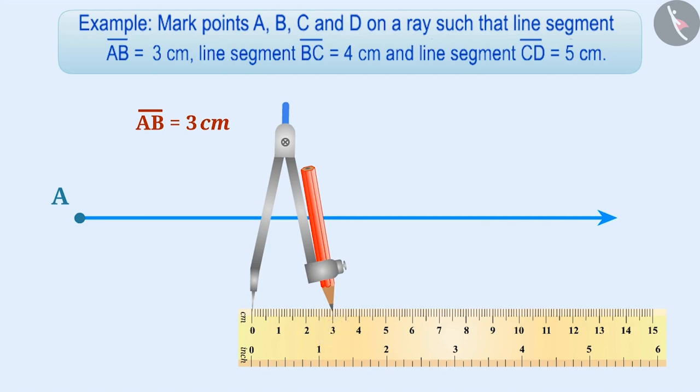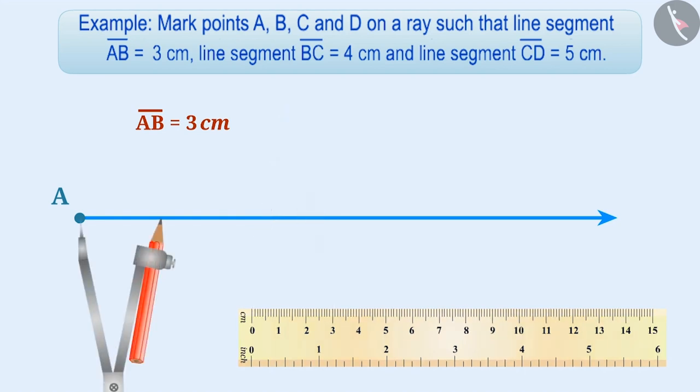Then, without changing the distance in the divider, put the endpoint of one arm on A and mark the endpoint of the second arm as B. In this way, we have represented point A and point B on the ray.